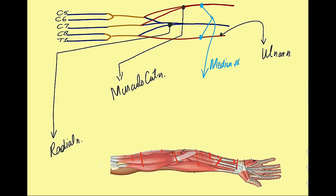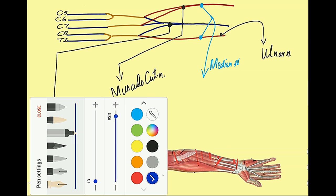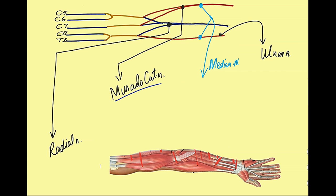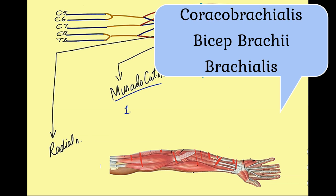The musculocutaneous nerve is the nerve for the muscles of the front of the arm. These muscles include: number one, coracobrachialis; number two, biceps brachii; and number three, the brachialis muscle.